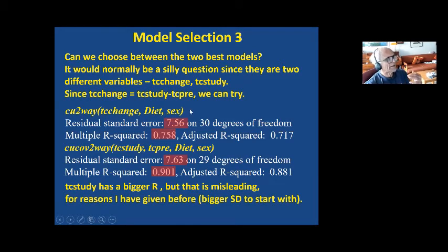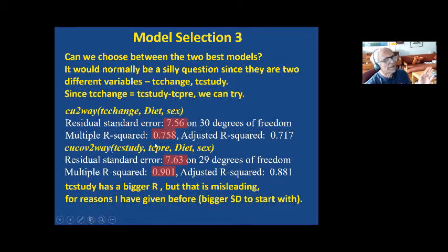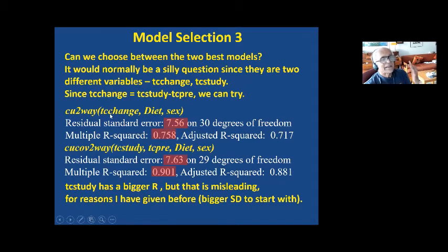It is better to look at the residual error. The residual error is 7.56 with TC change and 7.63 with TC study — not a big difference, really. So you can really go with either one. But if forced to choose, TC change is a slightly better model.